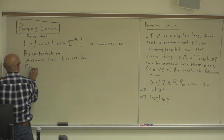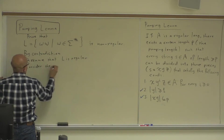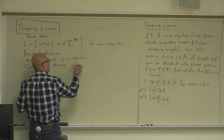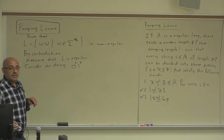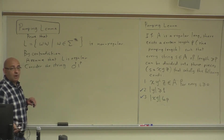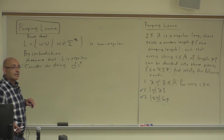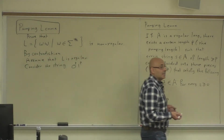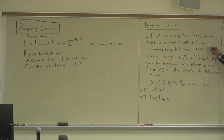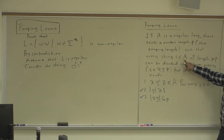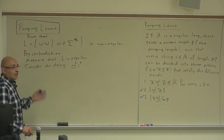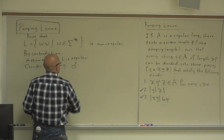Now we consider: what string should we use? Can we use the string 0^P 1^P? The answer is simply no. Why? It does not even belong to the language. The pumping lemma says there exists a certain length P such that every string S that belongs to the language of length greater than or equal to P can be divided. So we have to find something that belongs to the language.